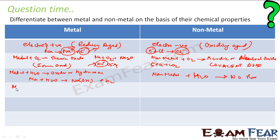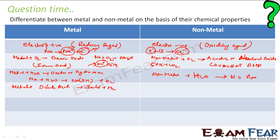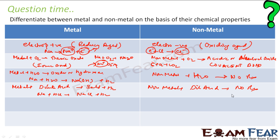Now let us talk about the reaction of metals with dilute acid — dilute acid, not concentrated acid. When a metal reacts with dilute acid, you generally get salt and hydrogen gas, except with nitric acid. For example, sodium reacts with hydrochloric acid to give NaCl and H₂ gas. In the case of non-metals with dilute acid, there is no reaction — non-metals do not react with dilute acid.